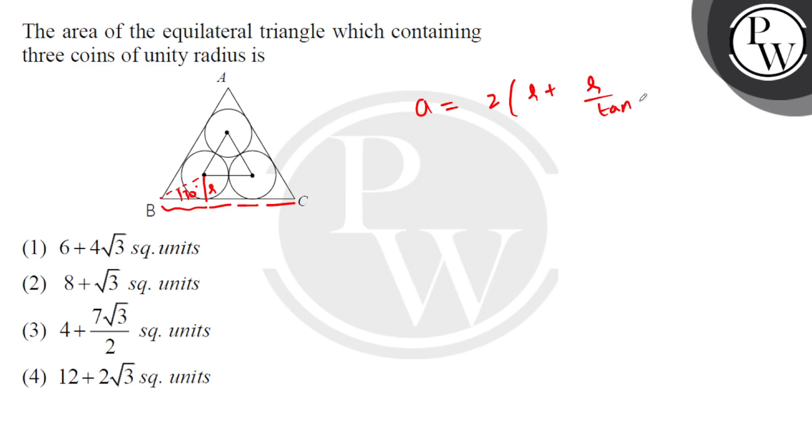Now ultimately, if we put the value here, then 2 times r is 1. So 1 plus root 3. This is the edge length.